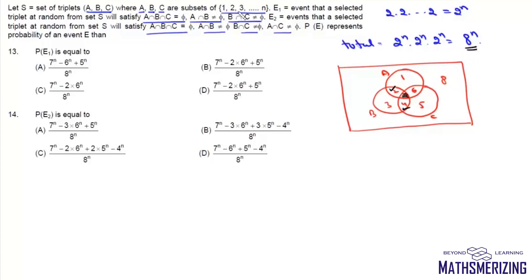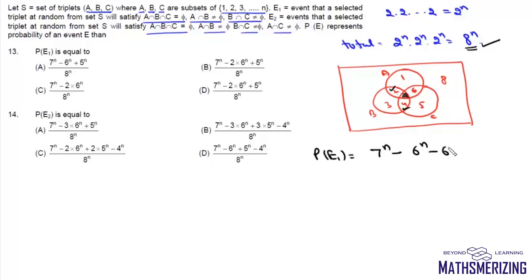Another way to look at this: 8^N arises because for every element there are 8 choices — it can be placed in either of these 8 regions. For E1 we cannot put any element in region 7, so for the remaining elements we have 7 choices, giving 7^N total. Then we subtract all cases in which at least one of regions 2 or 4 is missing. If region 2 is missing we have 6^N choices; if region 4 is missing we have 6^N choices. We've subtracted the case where both 2 and 4 are missing twice, so we add back 5^N. This is divided by total choices 8^N.